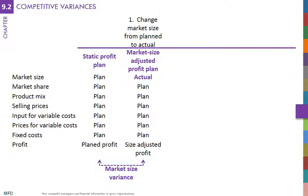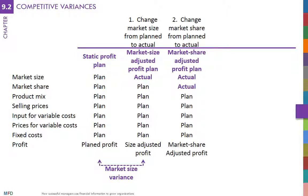The next variable is market share. To evaluate the impact of market share on profits, the revised profit plan — calculated with the actual size of the market — is compared to a new profit plan. This new profit plan starts with the actual size of the market but changes the market share from planned to actual. The new profit plan will differ because market share affects sales volume, and volume affects revenues and variable costs. It is important to note that the comparison is not made with the original profit plan anymore. The difference between the original profit plan and the latest one is due to two variances: market size variance and market share variance.